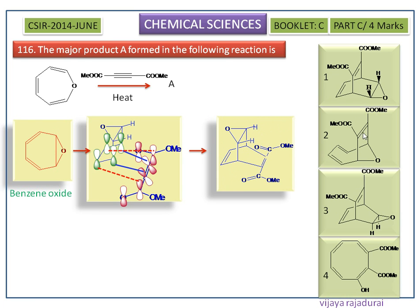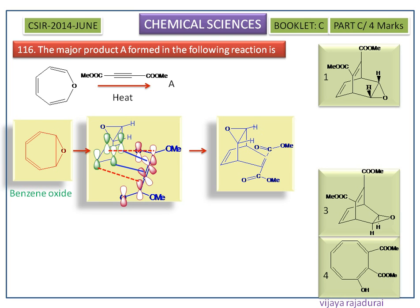In the given options, the first and the third options show molecules having a tricyclic ring. The second option has only a bicyclic ring, and the fourth option has only a monocyclic ring. So the second and the fourth options are not the correct answer.